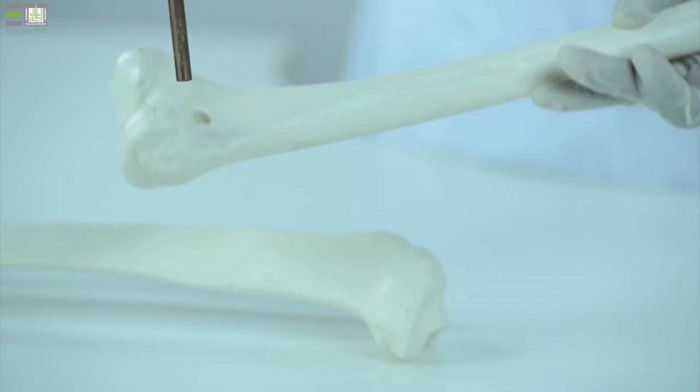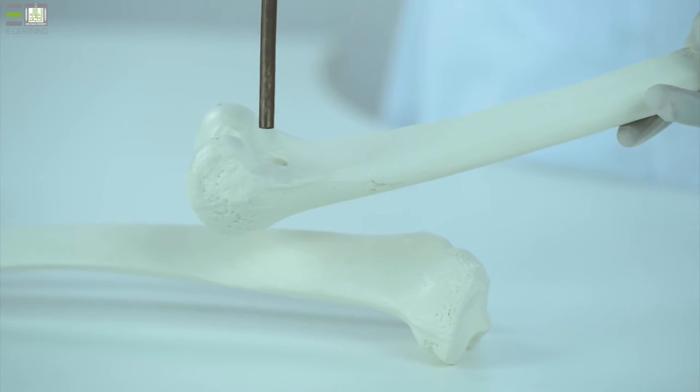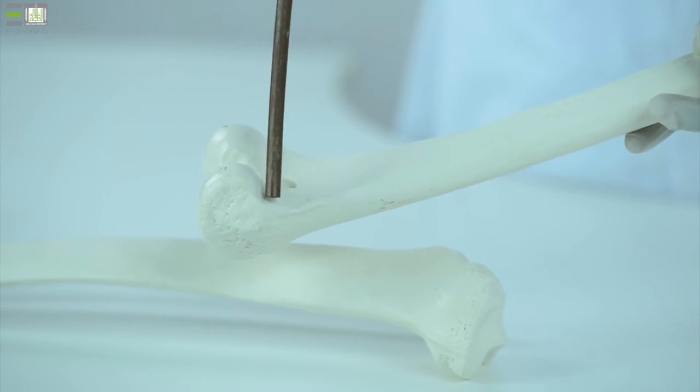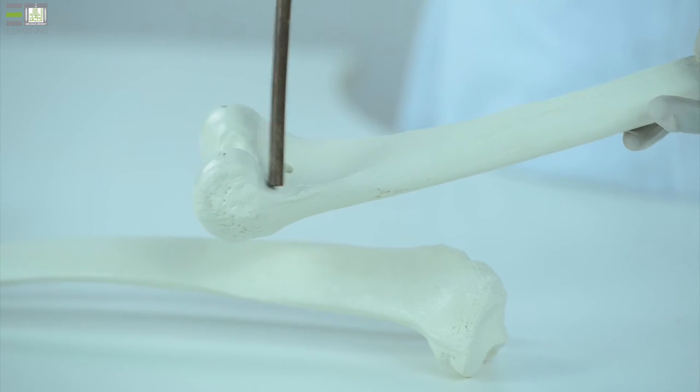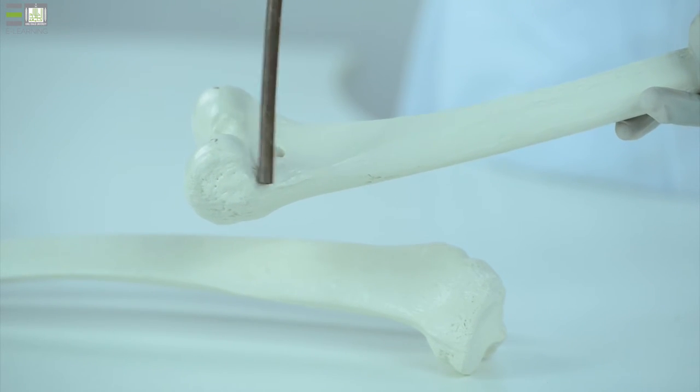This one is the lateral, and this one is the medial. On the medial condyle, we can see this projection for attachment of adductor magnus muscle called adductor tubercle.